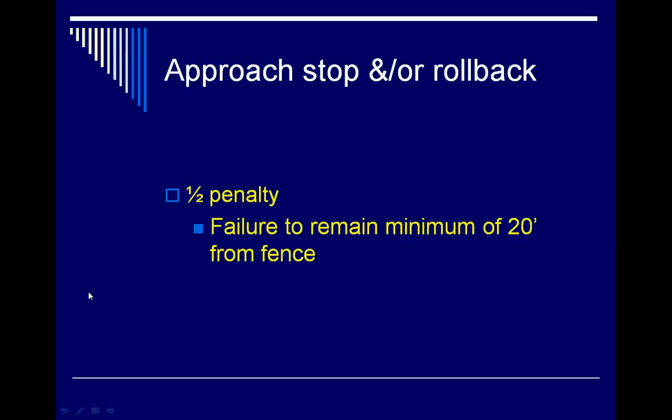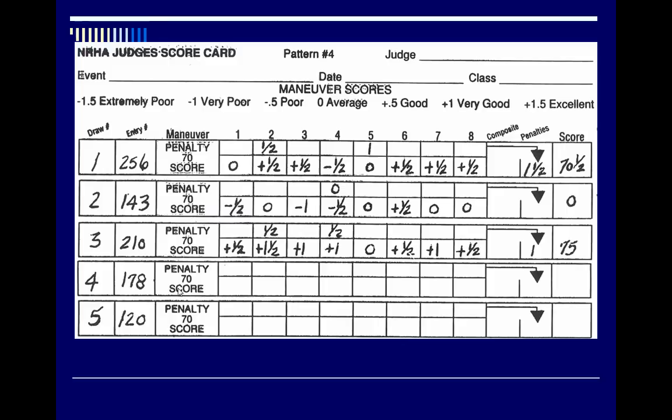On their approach to the stop and rollback, horses are supposed to be a minimum of 20 feet off the fence. If they're too close, it's a half-point penalty. They need to run down a comfortable distance, and if they're excessively close to the fence, a half-point penalty is assessed.